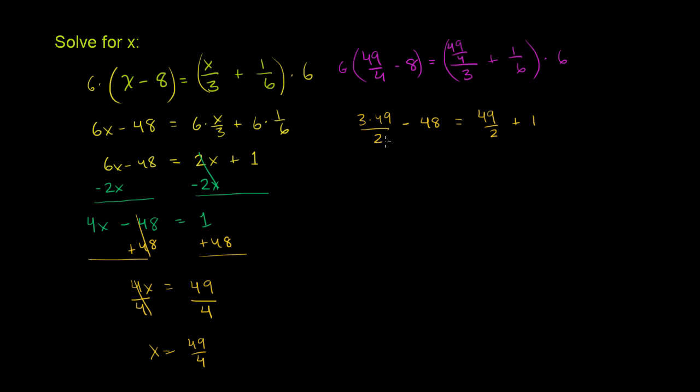And let's see. Well, I'm just going to actually just evaluate them out. I could just essentially have to subtract 49 over 2 from both sides, and that'll simplify things. But let me just figure out what these evaluate to.